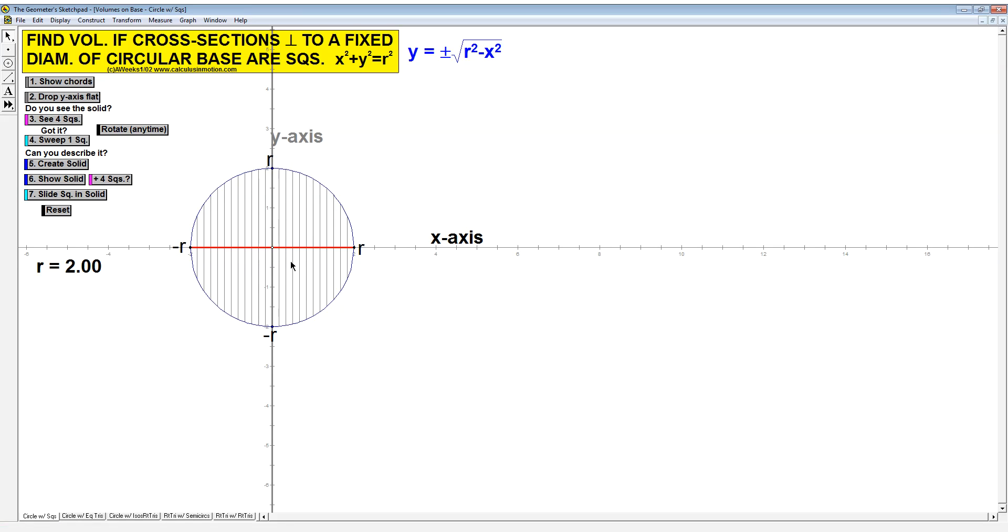The idea behind that is if we take the positive root, that will get us this far. And then if we subtract the negative root, subtracting a negative makes us another positive, and that gets us the rest of the way. We're looking for the length of this line segment because that's going to be the base of our solid.